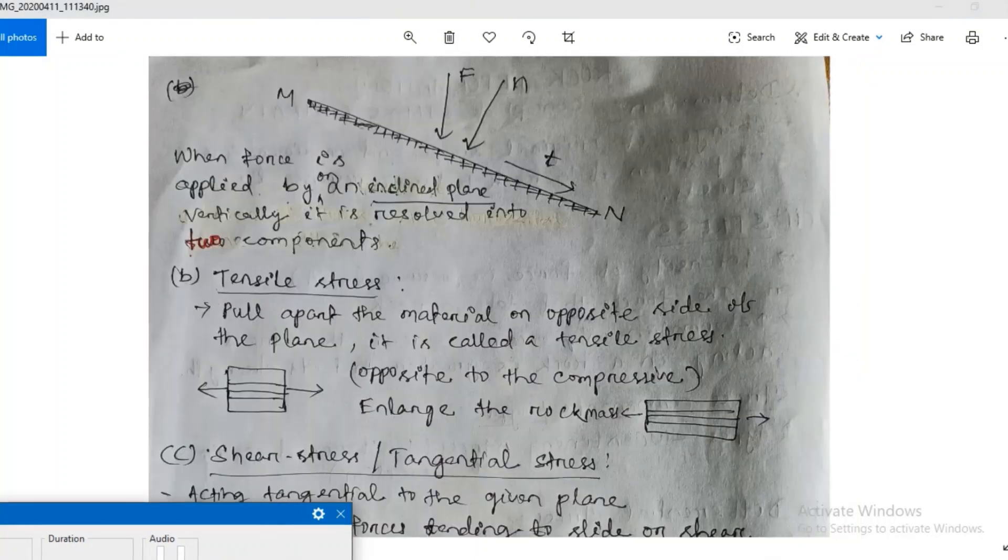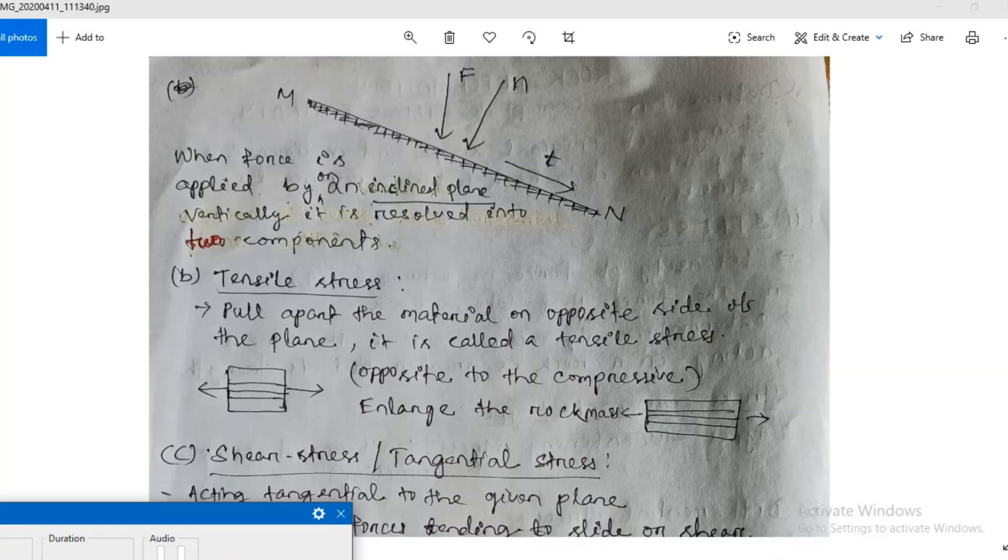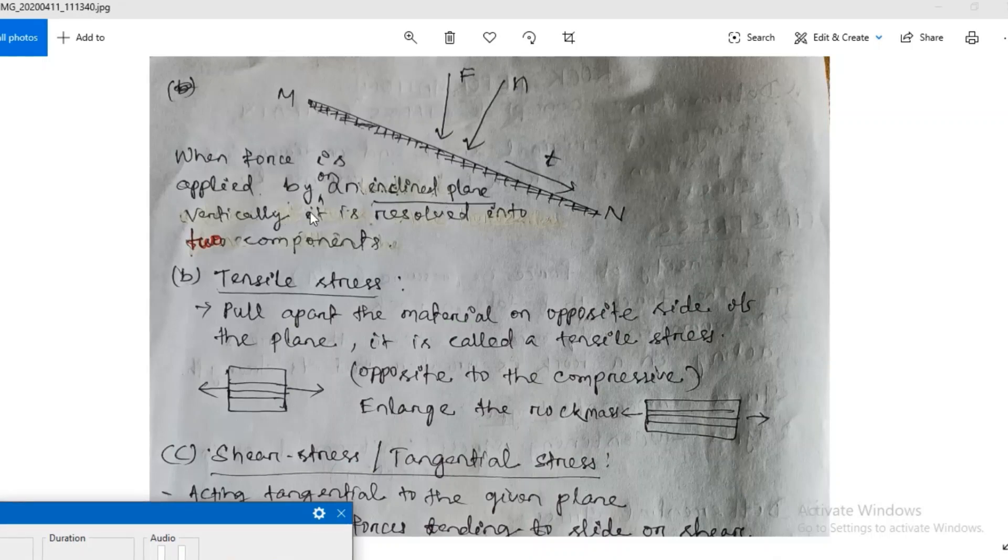In compressive stress, force is applied by a horizontal plane. But when force is applied by an inclined plane that is MN, vertically it is resolved into two components.